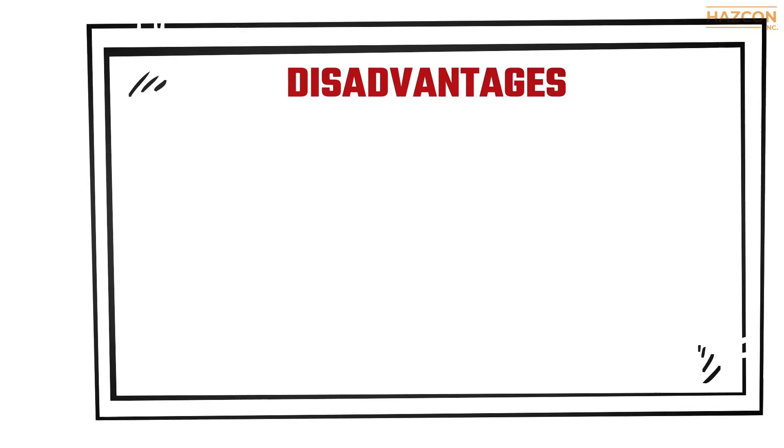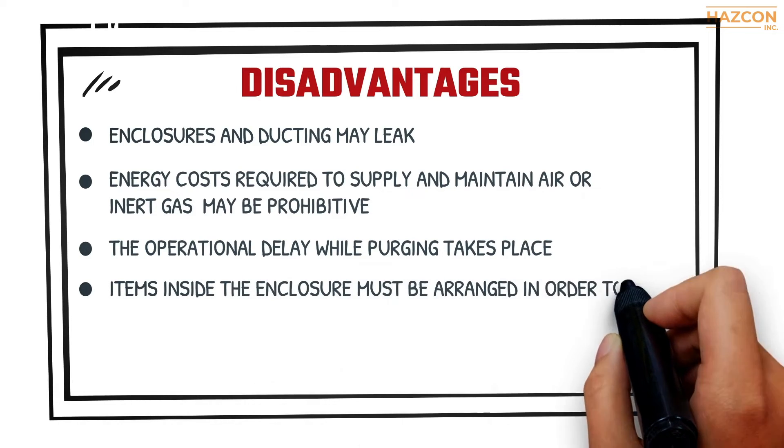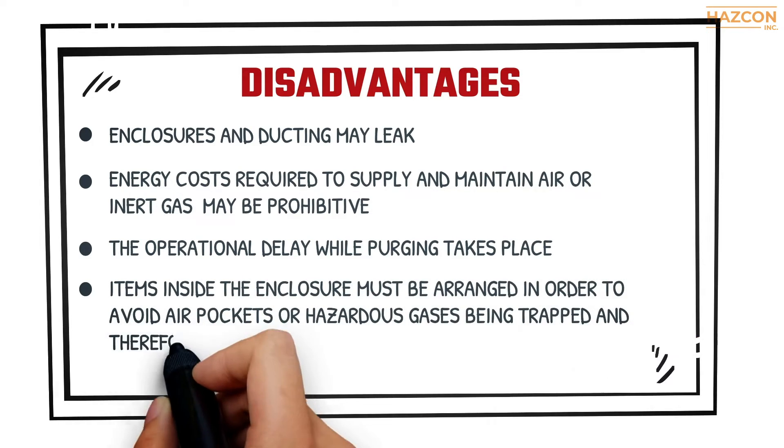The disadvantages include: these enclosures and ducting may leak, energy costs required to supply and maintain air or inert gas may be prohibitive, the operational delay while purging takes place, and items inside the enclosure must be arranged in order to avoid air pockets or hazardous gases being trapped and therefore not adequately purged.